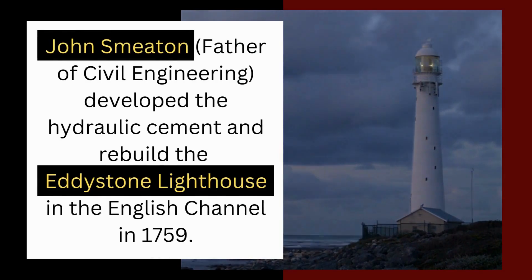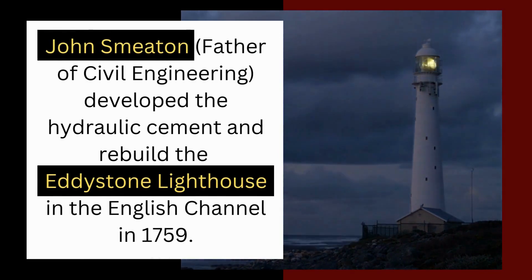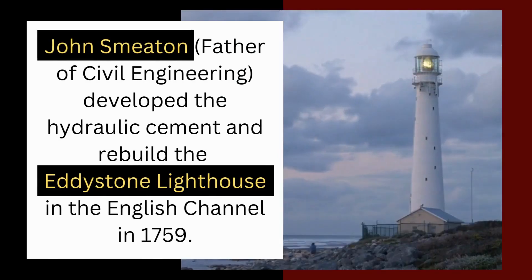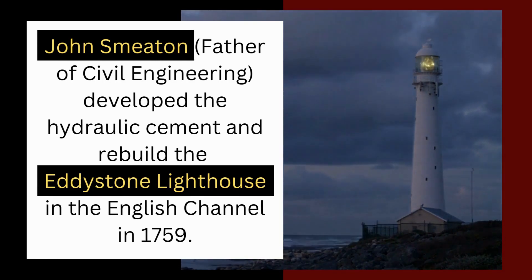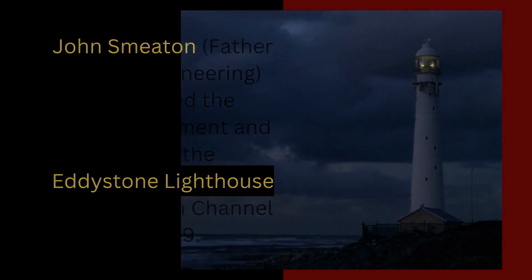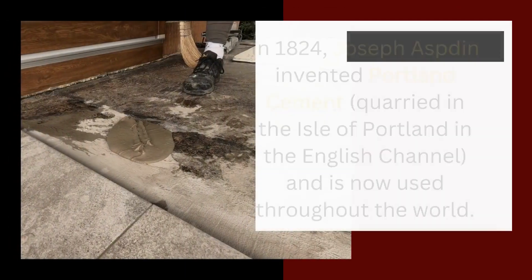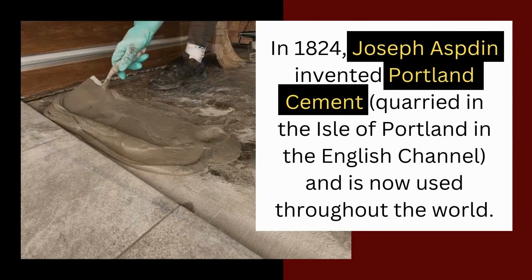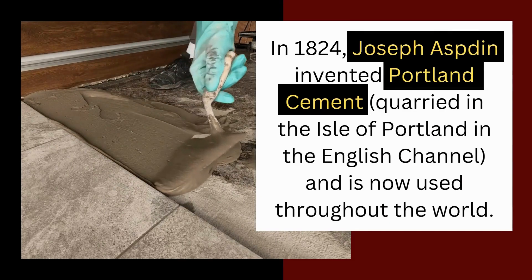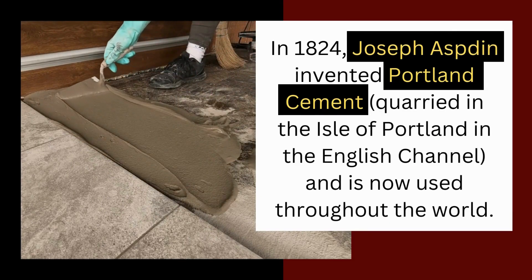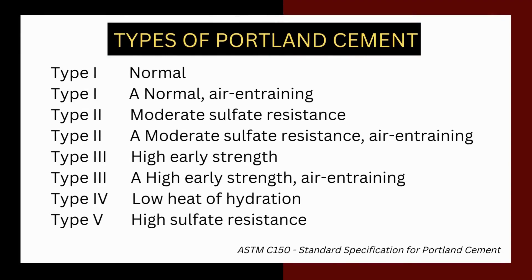John Smeaton, father of civil engineering, developed the hydraulic cement and rebuilt the Eddystone Lighthouse in the English Channel in 1759. In 1824, Joseph Aspdin invented Portland cement, quarried in the Isle of Portland in the English Channel, and it is now used throughout the world. These are the types of Portland, blended, and hydraulic cement.